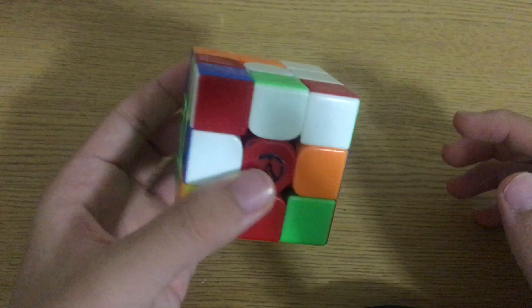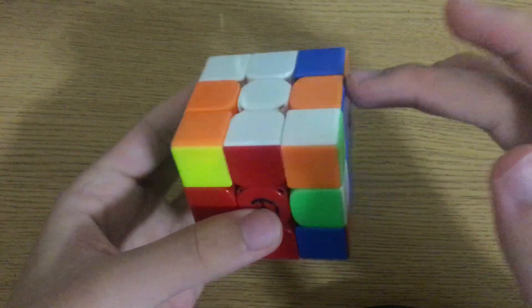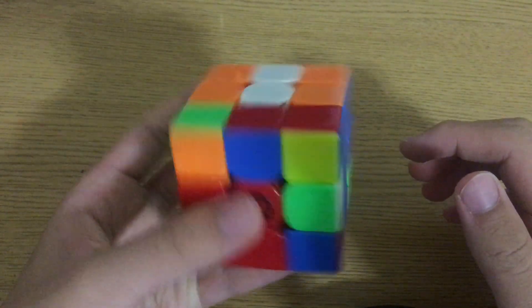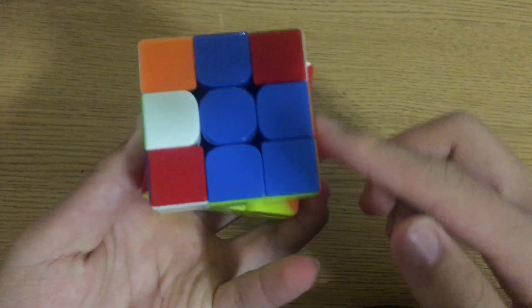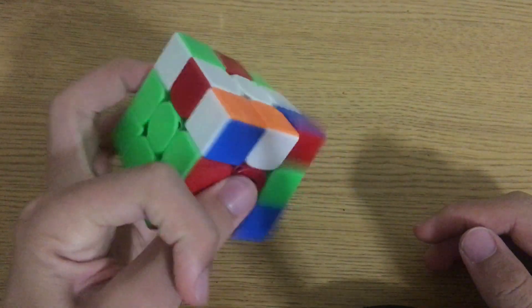And now we have our second pair like this. You might notice that the third pair also is very good for OH execution. And now we have this pair which you can normally insert like this.